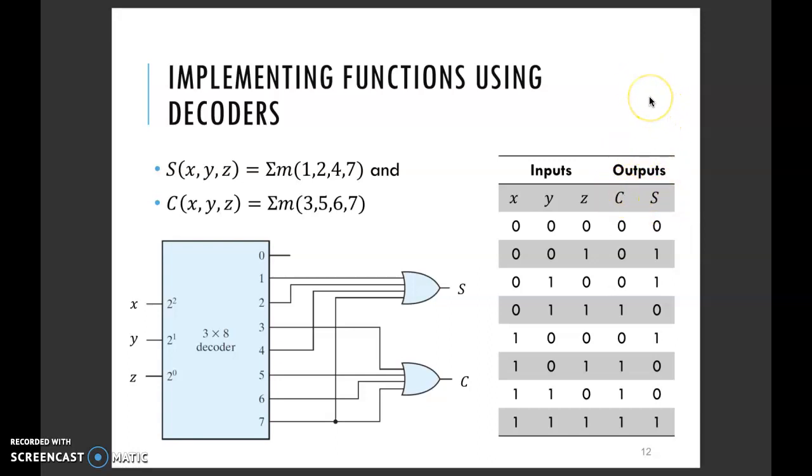From this truth table, you can write down your two Boolean expressions. Just read off from the columns of the carry and the sum where you have 1s. These 1s represent the minterms that you need to add and feed into your sum and carry.